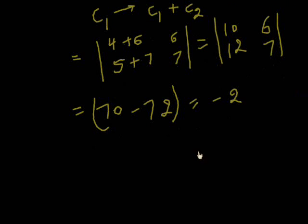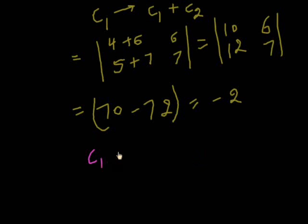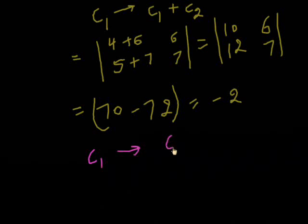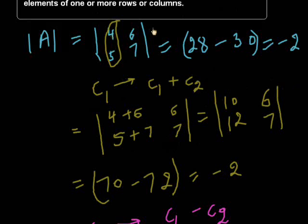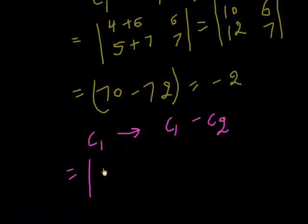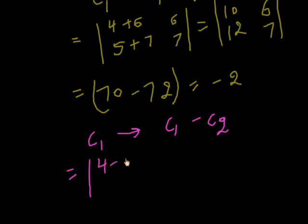If we change C1 with C1 minus C2, C1 minus C2 is 4 minus 6, 5 minus 7. The second column is 6 and 7.